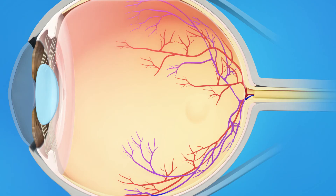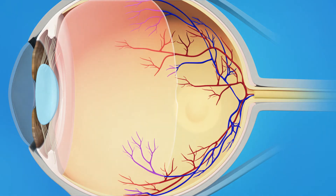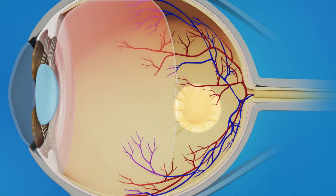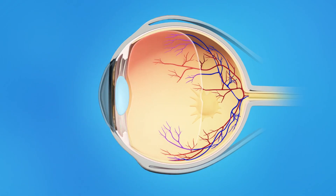In some cases, however, as the vitreous pulls away, scar tissue may develop on the macula. Sometimes the scar tissue can warp and contract, causing the retina to wrinkle or bulge.